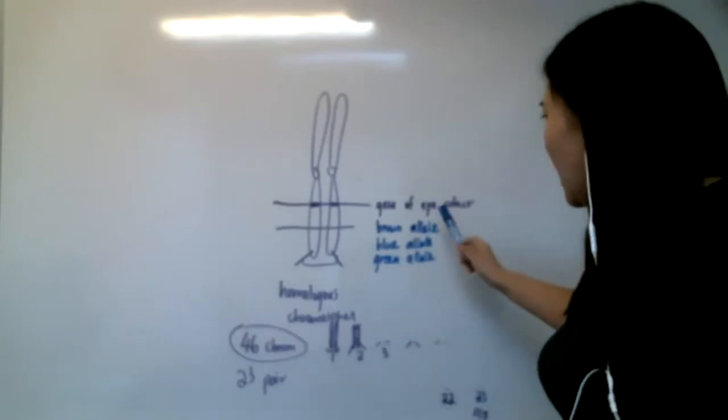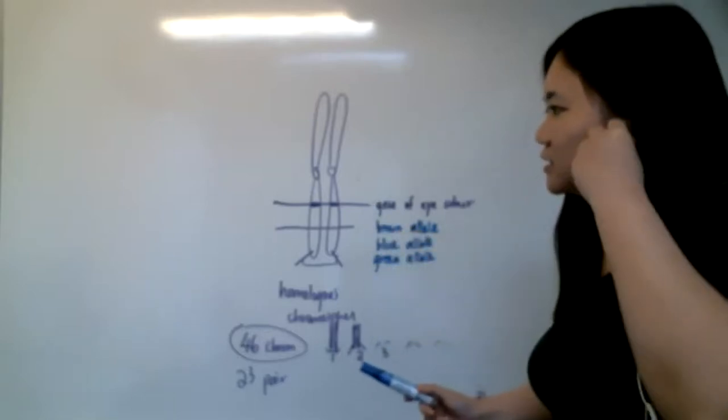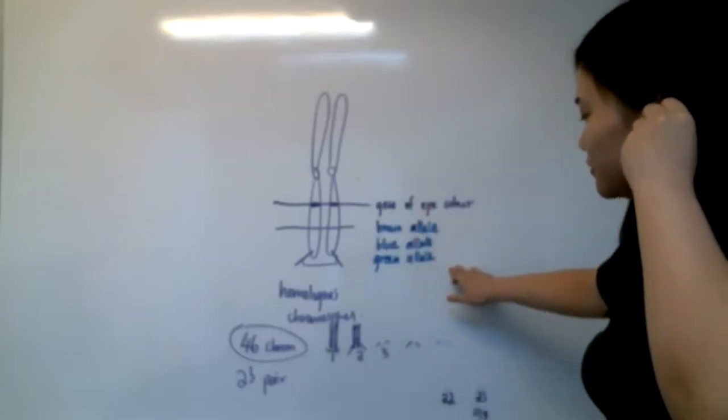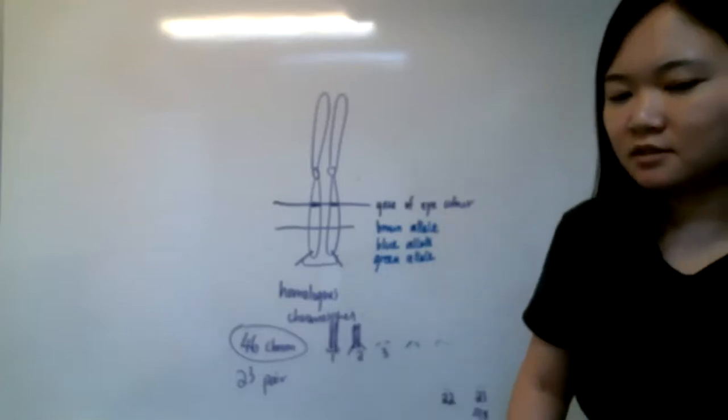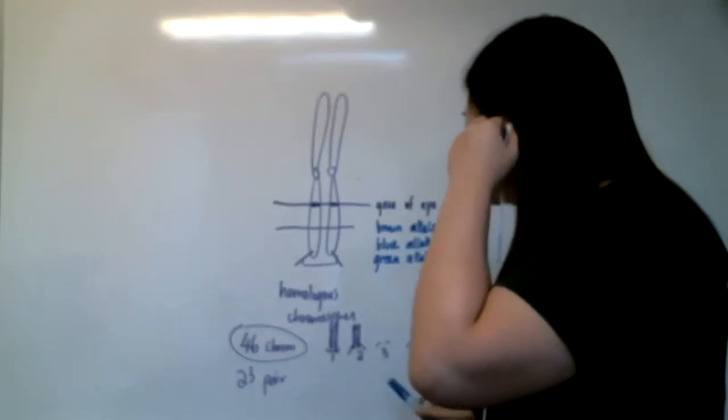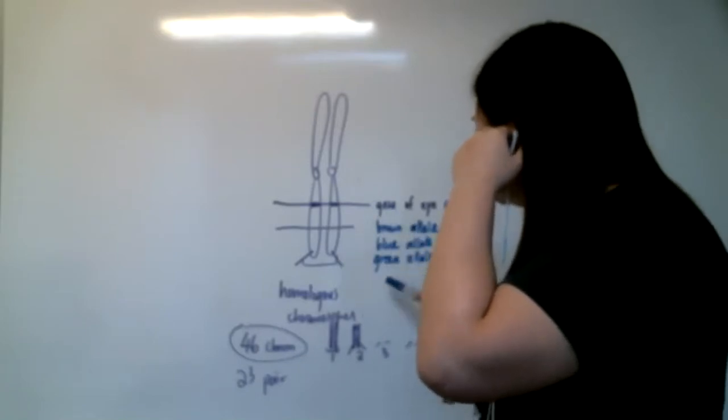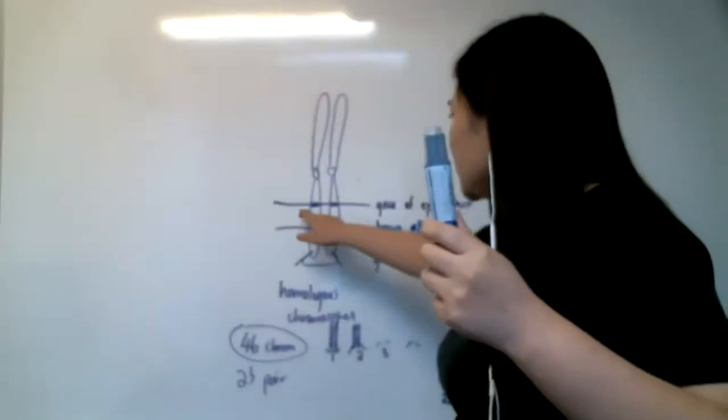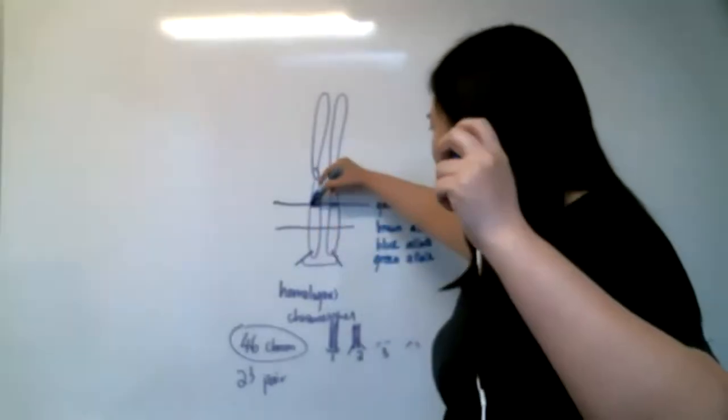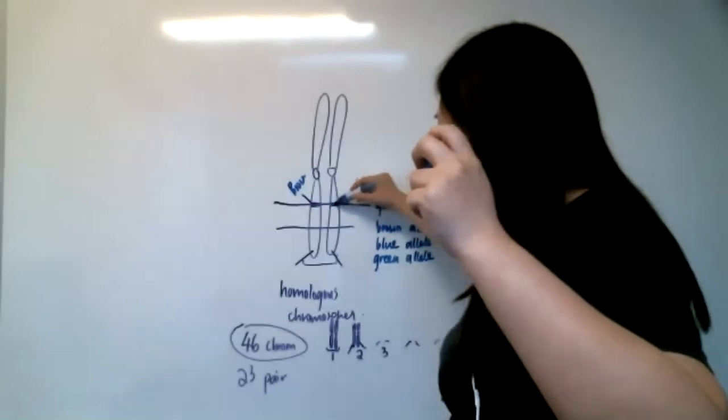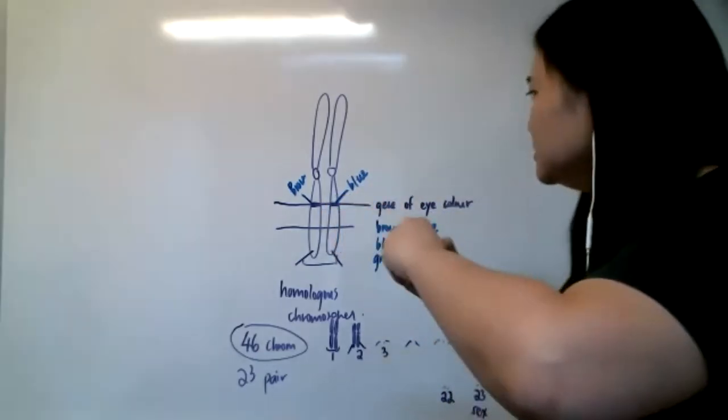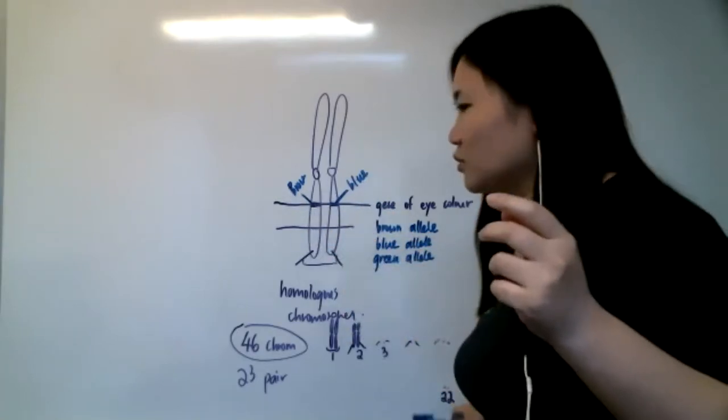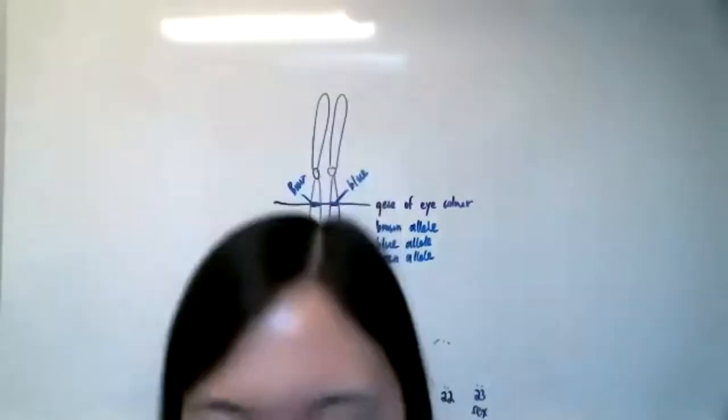So it means that eye color is a unit of inheritance, a gene. And for this gene, you have different alternatives. You could be brown, you could be blue, you could be green. So, alleles occur in homologous chromosomes. Why is that? Because remember, homologous chromosomes tend to have the same gene. So if, say, your father gives you a brown allele and your mom, who has blue eyes, gives you a blue allele, you have a brown allele and a blue allele in your homologous chromosomes. That is an allele.